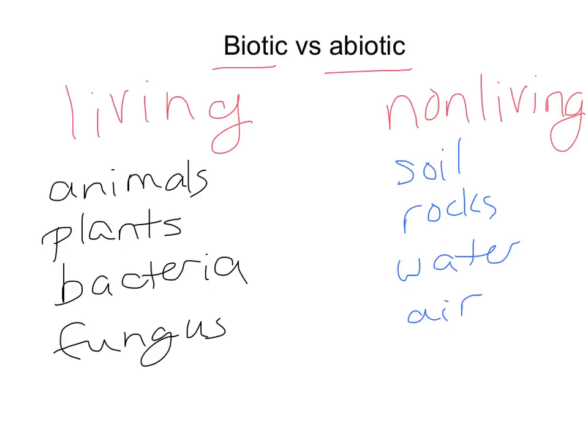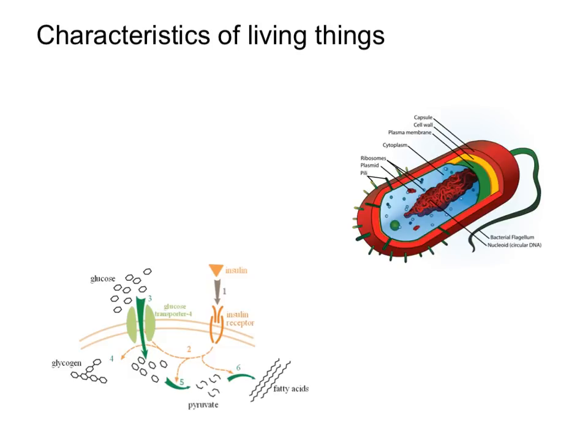Those two things are going to work hand-in-hand for survival of the species. This is biology class — we are going to focus on the characteristics of living things. All living things have a few things in common, whether it's a bacterial cell versus a human. One of the first things they all have in common is that they are all made of cells. Cells are the smallest unit of living things — the smallest thing that can be considered living.